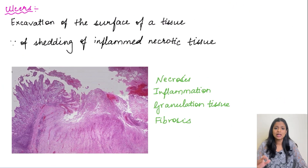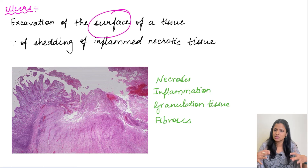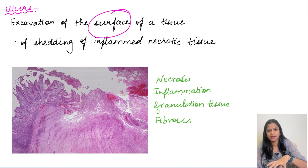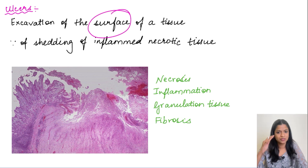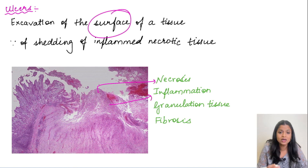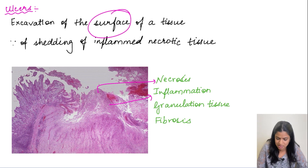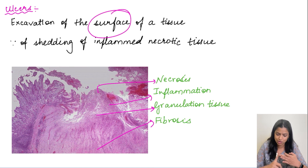Moving on, ulcers are the excavation of the surface of a tissue. The surface of the tissue is eroded because injury causes inflammation and necrosis; the necrotic inflammatory material is removed, forming an excavation — that is what we call an ulcer. There are four layers in an ulcer: the first layer is necrosis, the second is inflammatory cells, the third is granulation tissue composed of inflammatory cells along with new blood vessels and fibroblasts, and the fourth is fibrosis, a chronic process involved in repair.